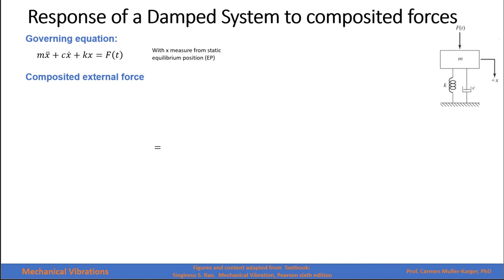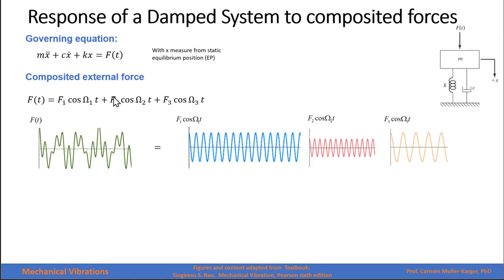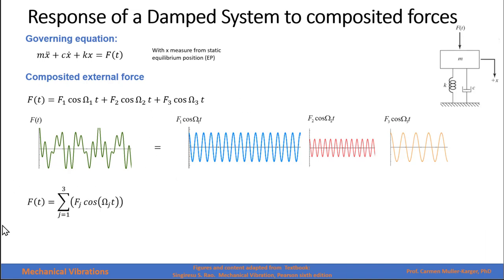The governing equation of this mass-spring-damper system, when we measure x from the equilibrium position, is shown here. If we have composite external forces — say the total force equals a harmonic force of frequency omega one, another force of frequency omega two, and another of frequency omega three — we can write this expression as a summation of three different forces where j varies from one to three.